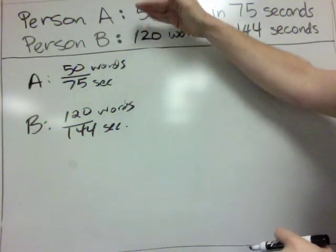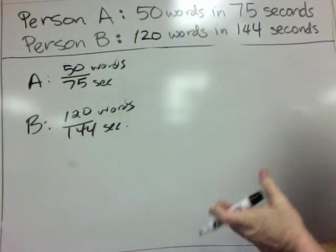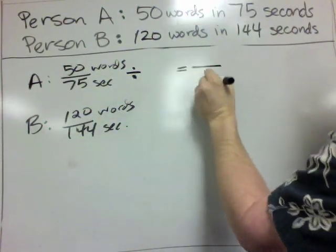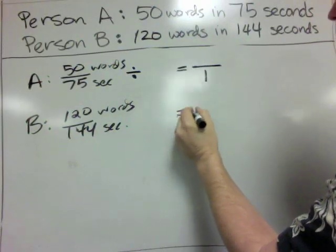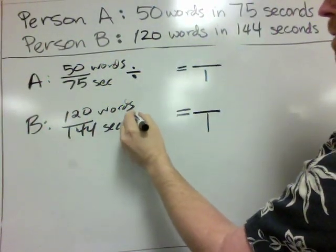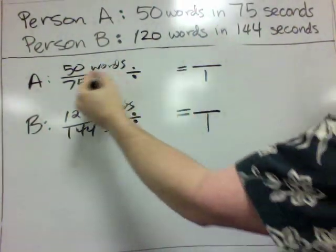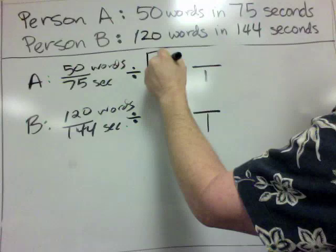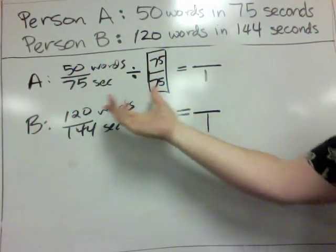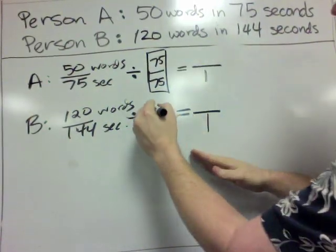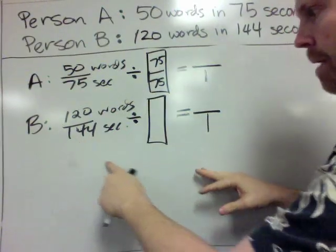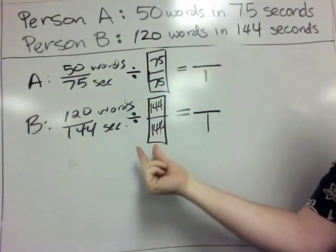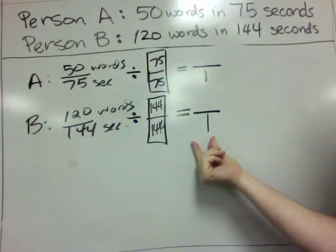Our last method for comparing these two typists is to get a unit rate. And so you remember that a unit rate is a ratio that has a 1 as the denominator. And so down here, we're going to rename both of these ratios so that they have a 1 as a denominator. So in this ratio, to turn the denominator into a 1, we need to divide by 75. So we're going to divide by the fraction 75 over 75, so we're dividing by 1 to get a denominator of 1. And similarly down here, we're going to divide by 1, but we want this denominator to become a 1, so we're going to divide by 144 over 144.